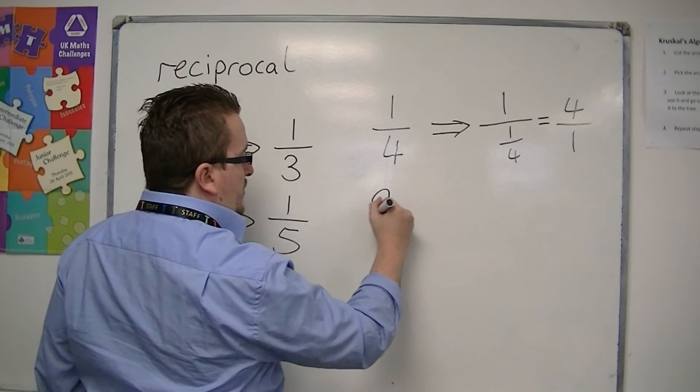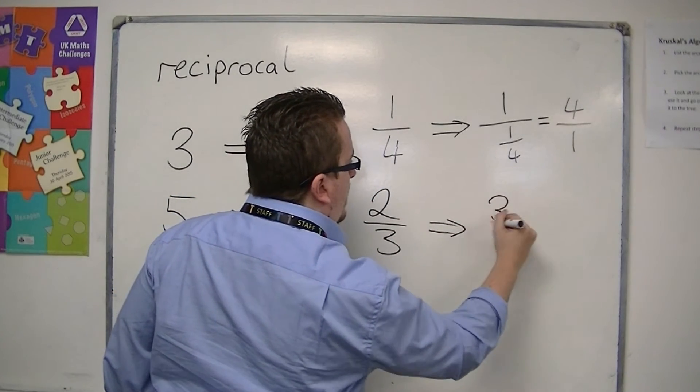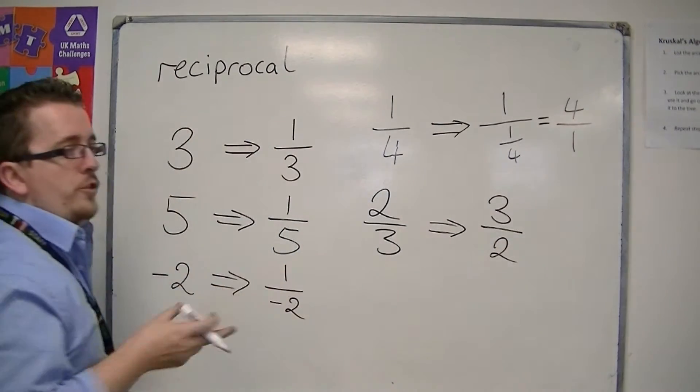So if you started off with 2 thirds, then the reciprocal is 3 halves, so the fraction flips.